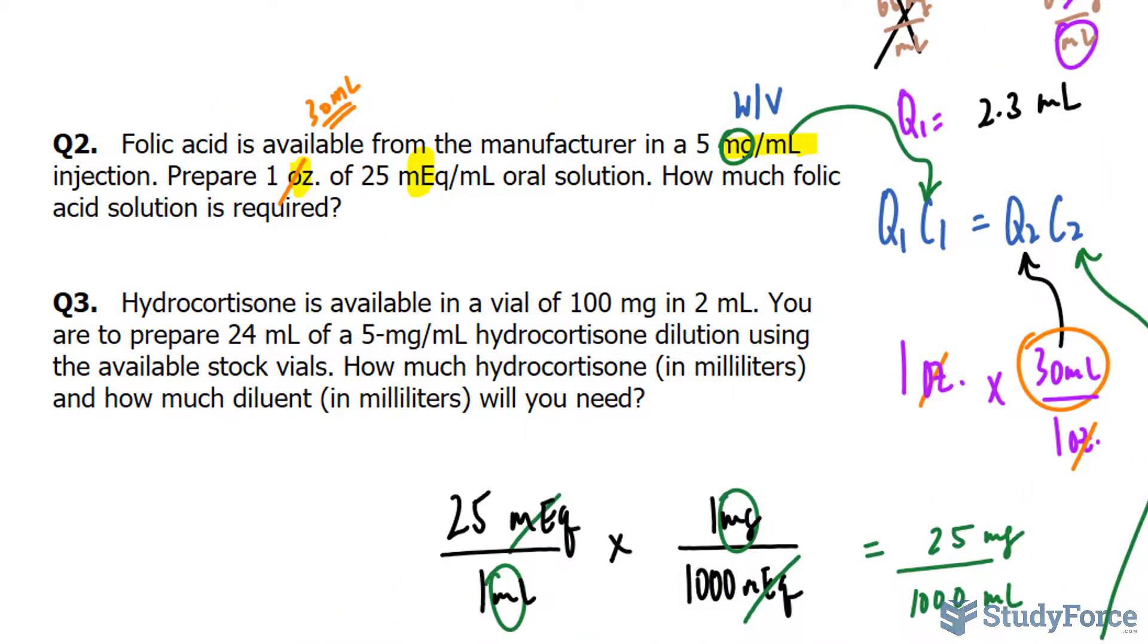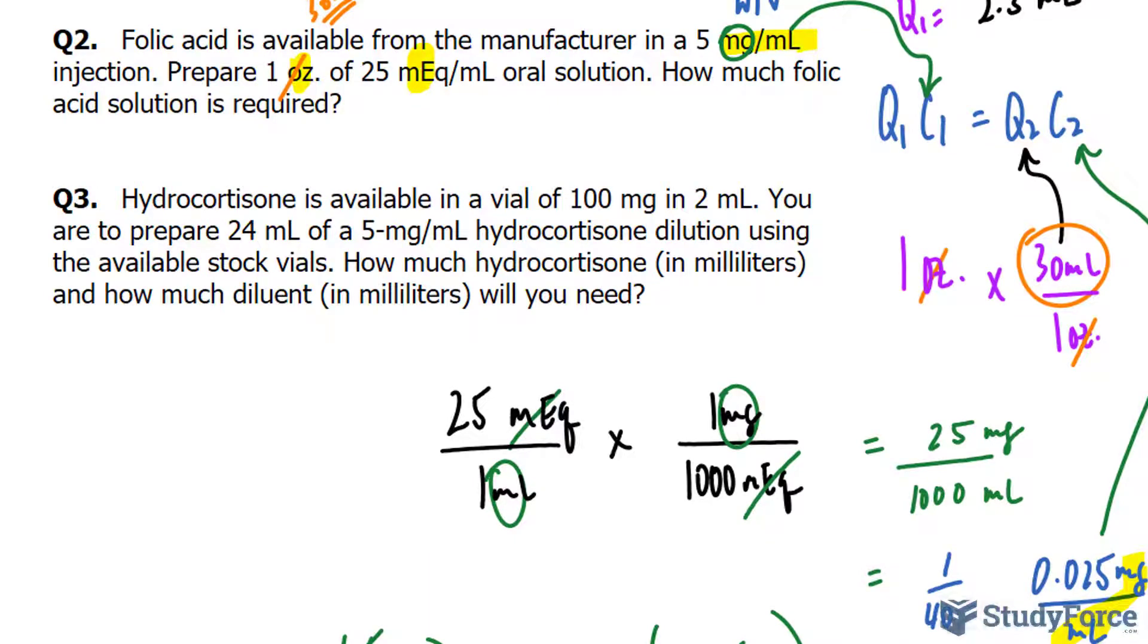So we haven't been told directly in question number 1 that it's concentration, but we are told the volume and the weight. So we have 100 milligrams per every 2 milliliters. That's a concentration, that's a weight per volume, and it reduces down to 50 milligrams per milliliter. So we don't know the quantity of the stock solution, that's what we're looking for.